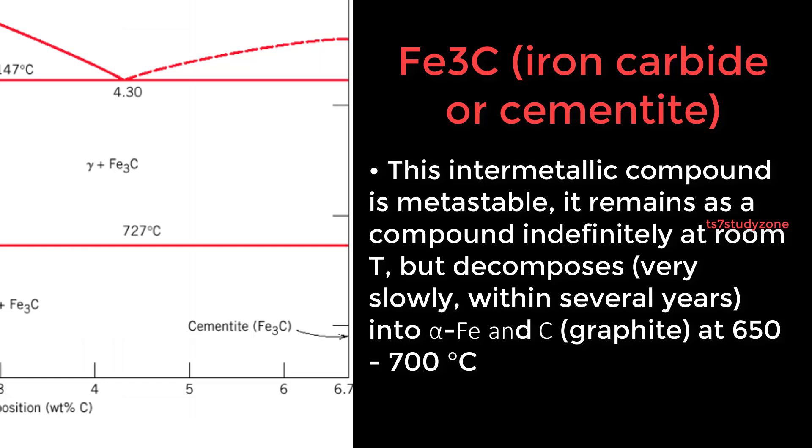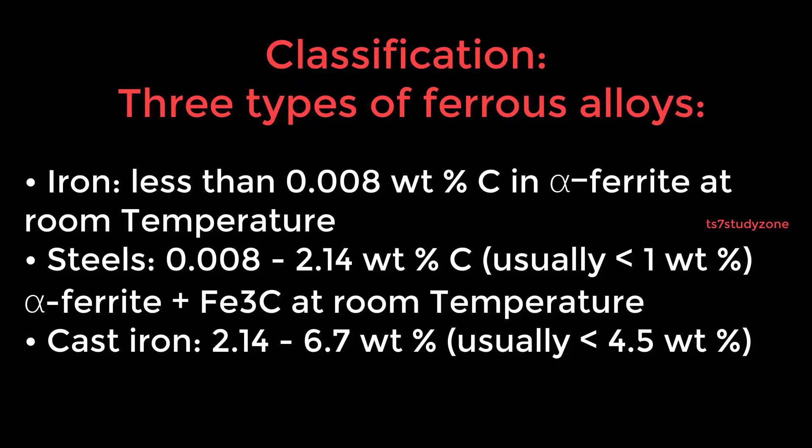Classification: Three types of ferrous alloys. Iron has less than 0.008 weight percent carbon in alpha ferrite at room temperature. Steels have 0.008 to 2.14 weight percent carbon, usually less than 1 weight percent, consisting of alpha ferrite and Fe3C at room temperature. Cast iron has 2.14 to 6.7 weight percent carbon, usually less than 4.5 weight percent.